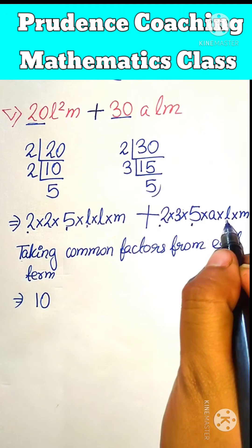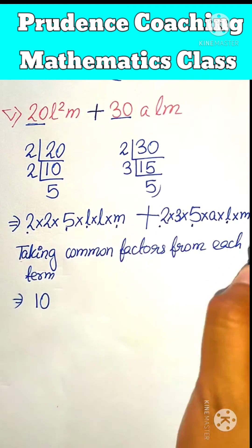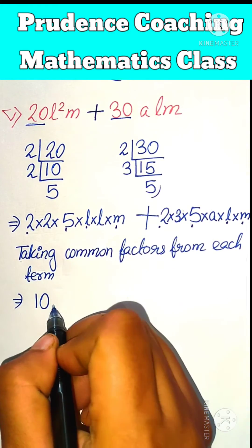And here we have one l, here also one l. Here we have another one l, here we don't have another one l. Here we have m, here also m. So in case of variables, we can take l m as the common factor.